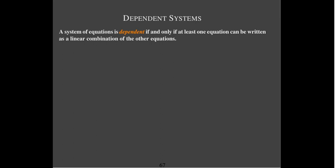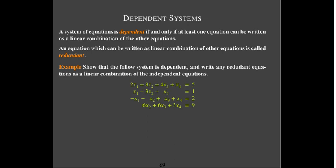We talked about dependent systems. The definition is that the augmented matrix has at least one row of zeros. Another way of thinking about it is that at least one of the equations can be written as a linear combination of the other equations. An equation which can be written as a linear combination of other equations is called redundant — we don't need it, and throwing it out does not change the solution set of the system. We'd like to show that a given system is dependent and write the redundant equations as linear combinations of the independent ones.